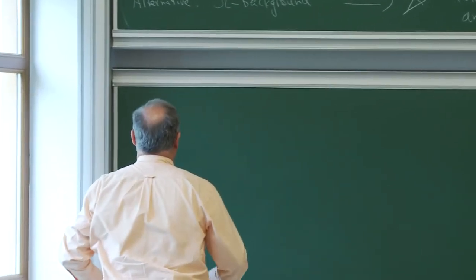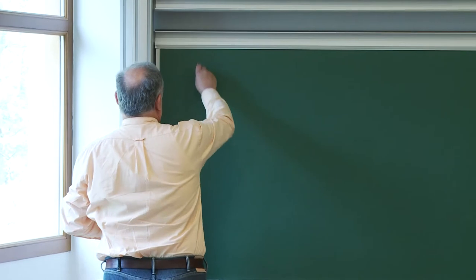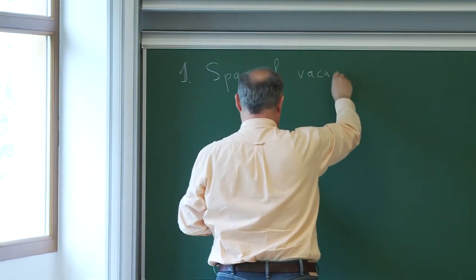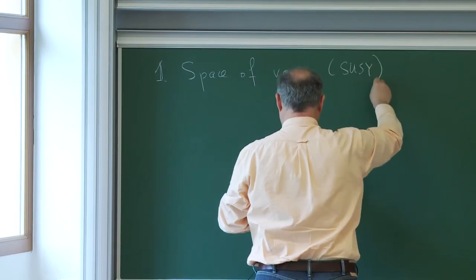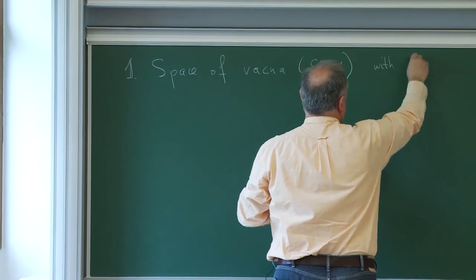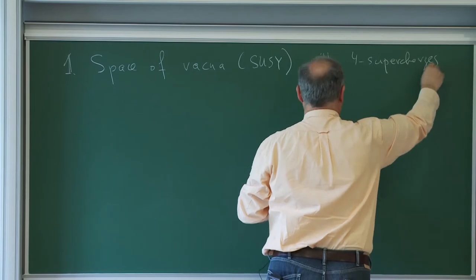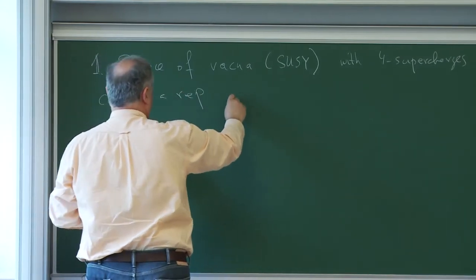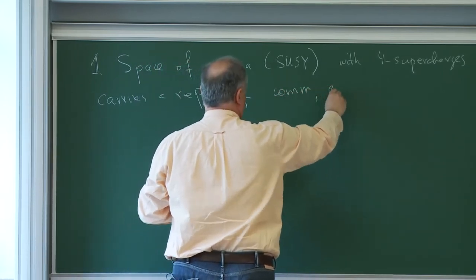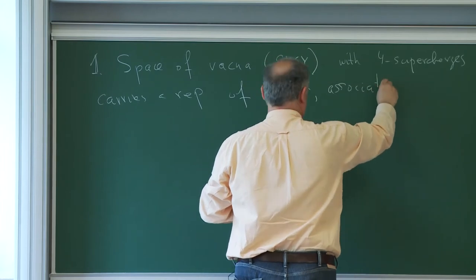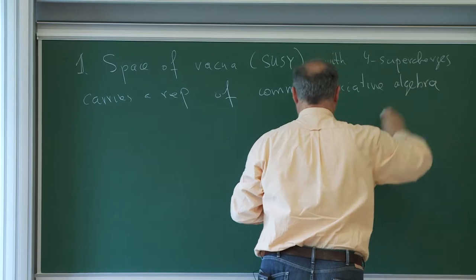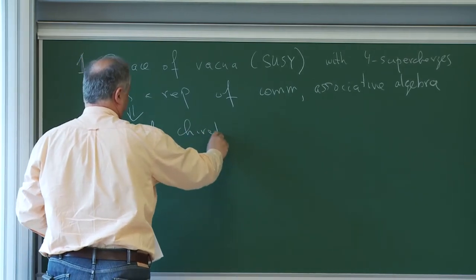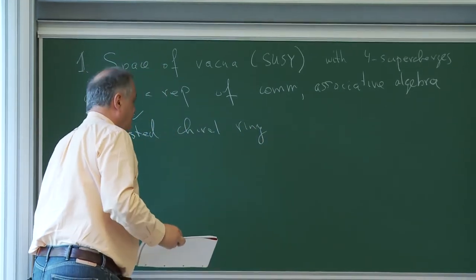Now I want to say a few words about the algebra of four supercharges. The first statement is that the space of vacua — which means supersymmetric vacua — in theories with four supercharges carries a representation of a commutative associative algebra, which is called the twisted chiral ring. So this is something we are first interested in, and let me introduce this object.